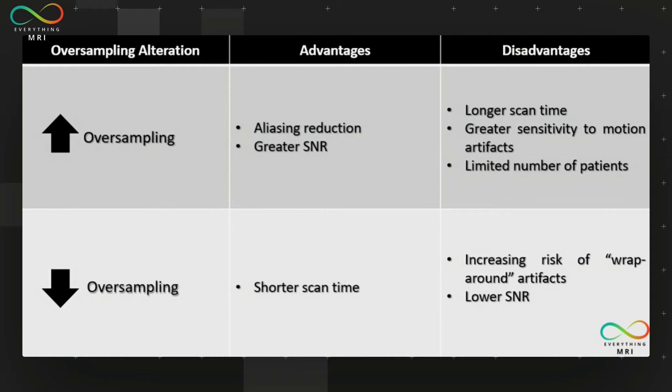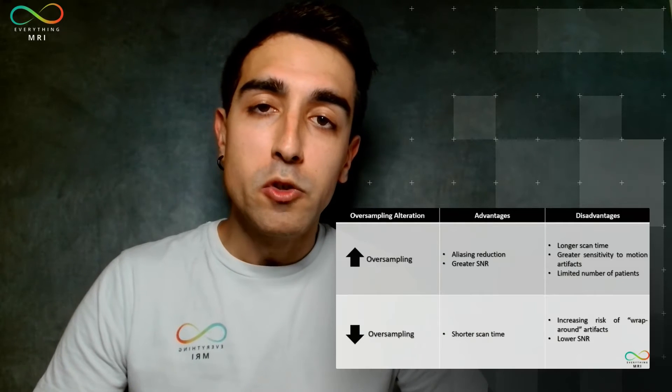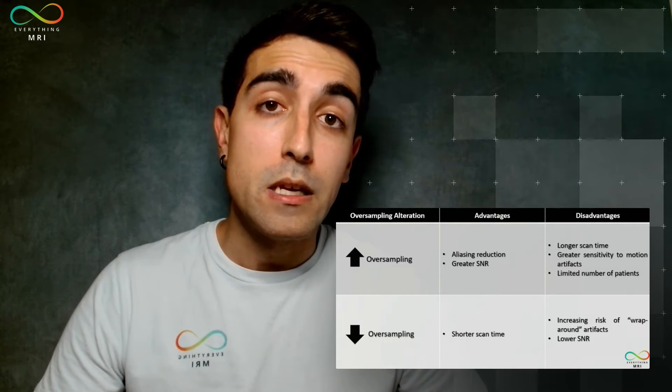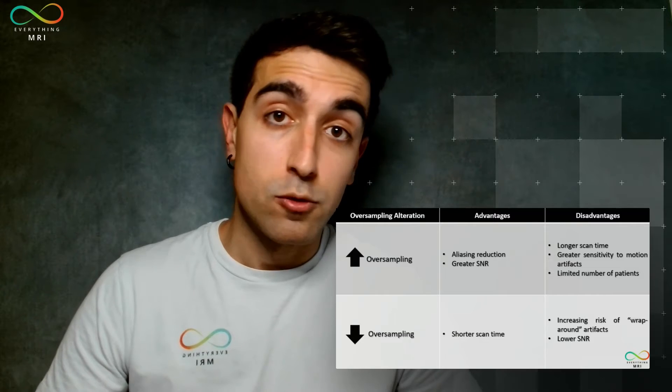However, there is a trade-off which is longer scan times. Longer scans might introduce motion artifacts, as we've seen before with NEX, and if protocols are uniformly saved with 100% phase oversampling and minimal parameter optimization, this obviously could result in 4-5 minute sequences, maybe even more, potentially limiting the number of patients to be seen. On the flip side, reducing the oversampling might have the opposite effect but obviously other drawbacks.